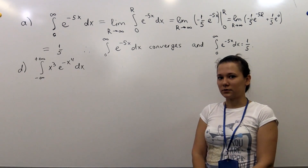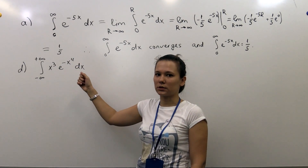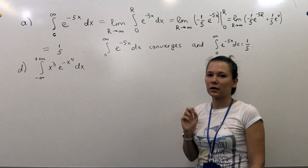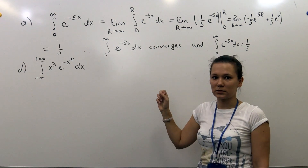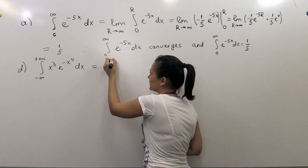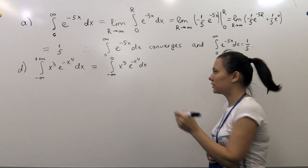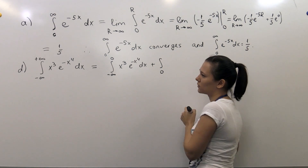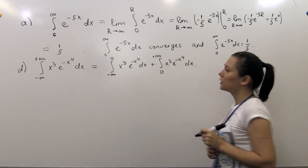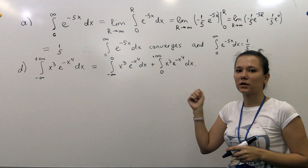Now our second improper integral is a very different one because we have infinity on both sides of the integration — minus infinity on the bottom and plus infinity on the top. With this integral we work in a completely different fashion. We don't take the limit immediately. We first divide our integral into two parts: the integral from minus infinity to 0, plus the integral from 0 to plus infinity of the same function. Now we have a sum of two improper integrals where infinity stands only in one limit of integration, and we can apply the definition.